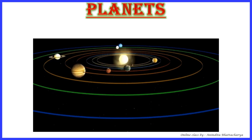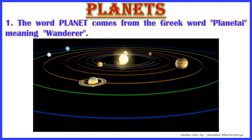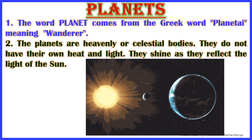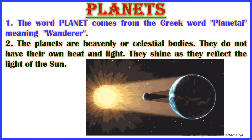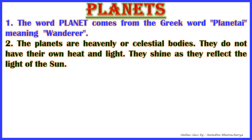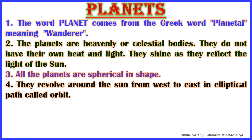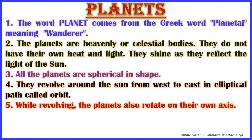Our next topic is planets. The word 'planet' comes from the Greek word 'planetai' meaning 'wanderer'. Planets are heavenly or celestial bodies. They do not have their own heat and light — they shine by reflecting the light of the Sun. All planets are spherical in shape and they revolve around the Sun from west to east in an elliptical path called an orbit.